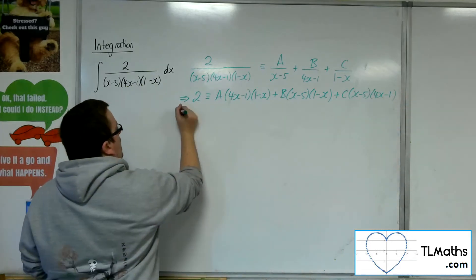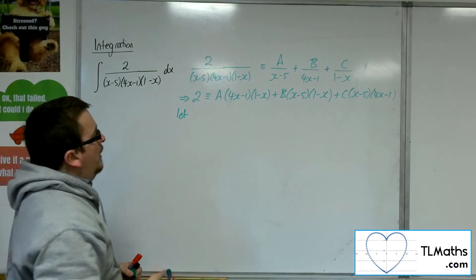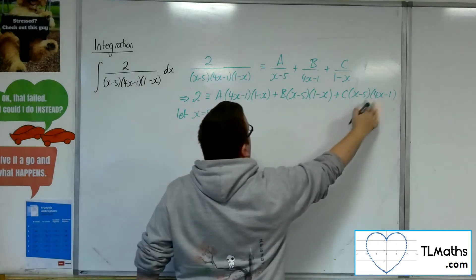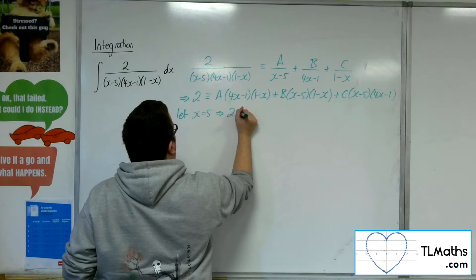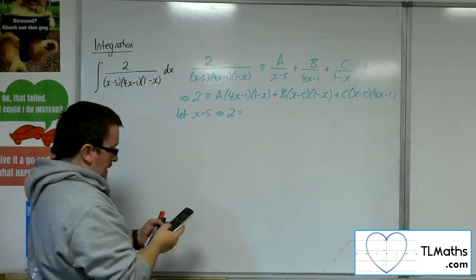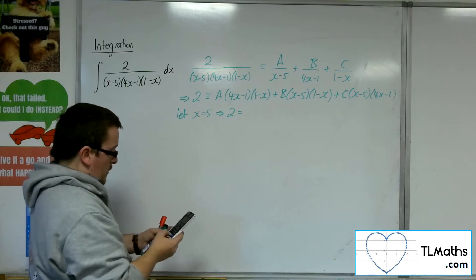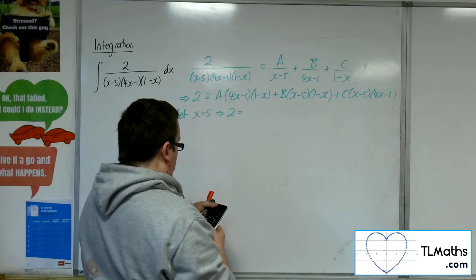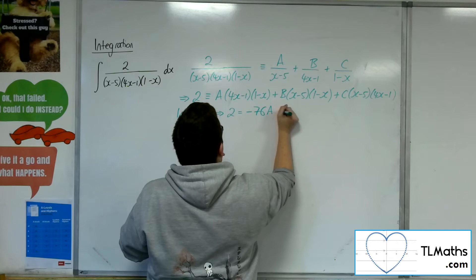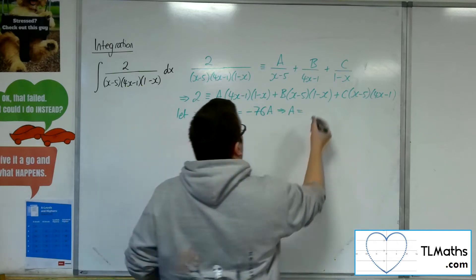Let's first let x be 5 to knock out those brackets. We'll have 2 = A(4·5-1)(1-5), which is -76A, so A = -1/38.